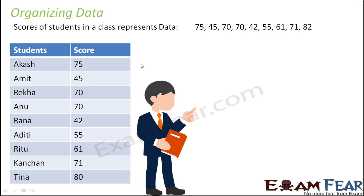One way could be the teacher prepares a table where he writes the names of all the students in the class and their respective scores. When he does this, looking at the table, you can very quickly see that since the numbers are written in a more organized way, it is easier to compare them. By quickly looking at the numbers, you see that 80 is the maximum — that means Tina scored maximum marks.